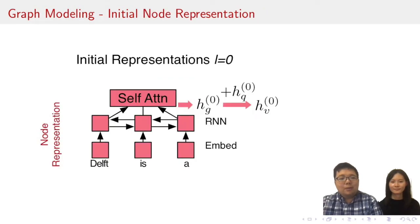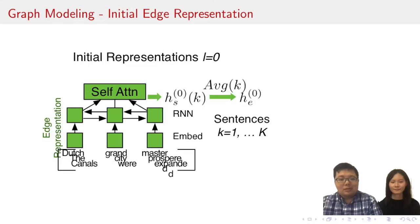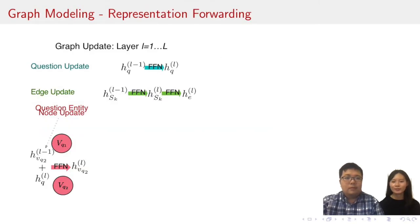For node representation, we follow the same scheme for node gloss and sum the gloss representation and the question representation as the node representation. The edge representation is slightly different. We first adopt the similar scheme to get each edge-sentence representation. Then, the edge representation is average of the k-sentences. Now we have the initial representation. How does the model pass the representation to the candidate entity nodes? This comes to the graph update component.